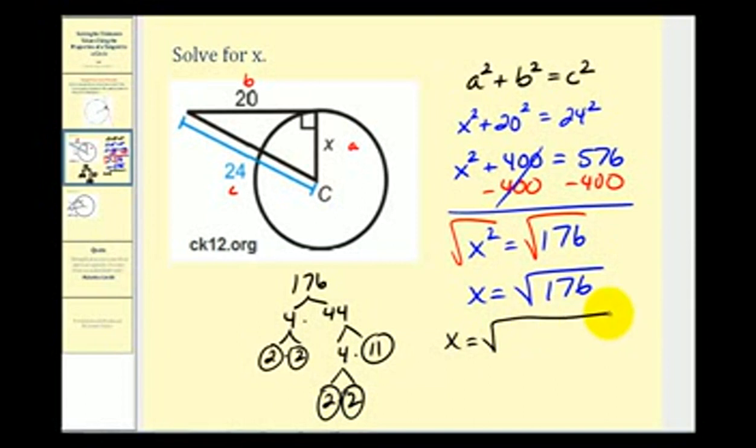We have X equals the square root of, we have 4 factors of 2 and a factor of 11. Every time we have 2 equal factors, we have a perfect square factor. So 2 times 2 is 4, that's a perfect square. 2 times 2 is 4, that's a perfect square.